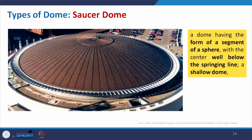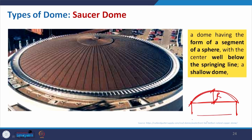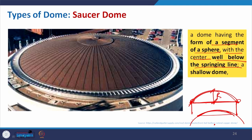The saucer dome is also referred to as a segmental dome. For a saucer dome, the rise is not at the level of the supports — the center of the arch is below the springing line. A dome having the form of a segment of a sphere with the center well below the springing line — this is the saucer vault. Here you can see how flat it almost is.